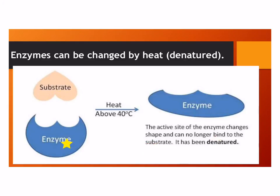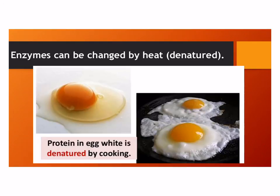Here's the substrate and the enzyme. If it's too hot — heat above 40 degrees — the enzyme changes shape, and now the substrate can no longer fit in the active site. We call this denaturation. You're probably familiar with protein denaturation because you've seen eggs cooked. The clear part of a raw egg is made entirely of a protein called albumin. When albumin is heated, it is denatured — we can see that when we cook an egg, the texture and color of the egg white changes due to the heat.